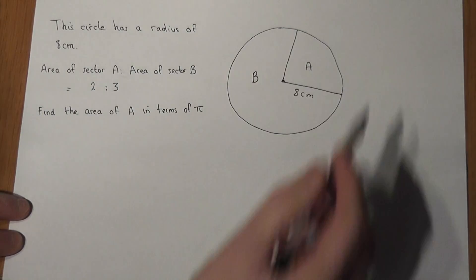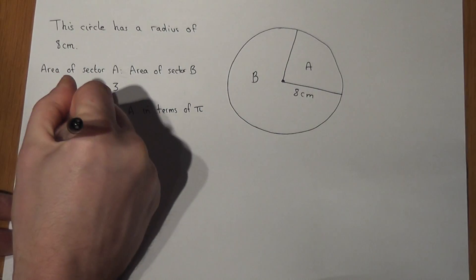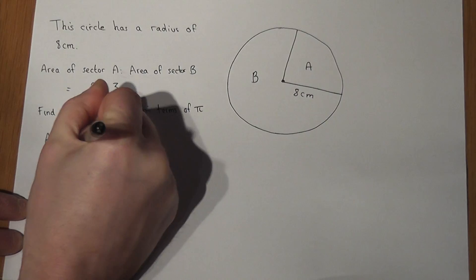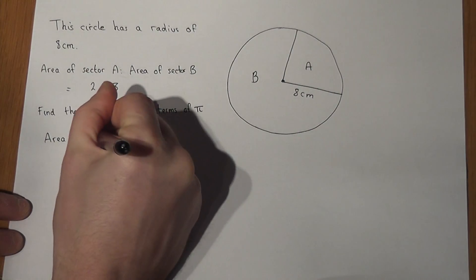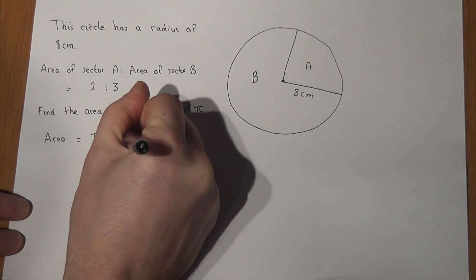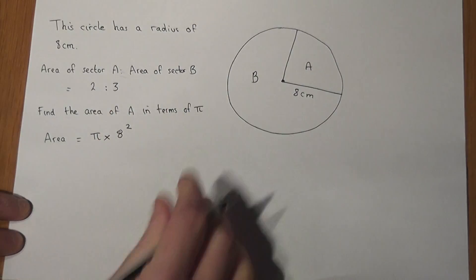Now if it was an entire circle, then to find the area of the whole circle it would be π times the radius squared. That's the formula to work out the area of a circle.